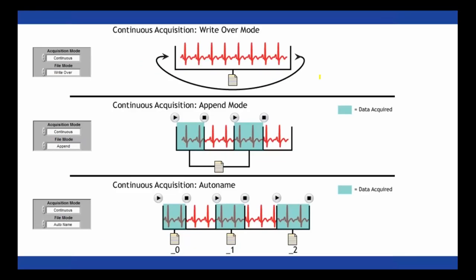The first continuous mode file option is write over mode. In this mode, if you start an acquisition and stop it, then start a new acquisition, it's going to immediately start writing over the data you just recorded. This mode is not used very often and can be dangerous if you're not careful, so I'd recommend using one of the other modes unless you have good reason.